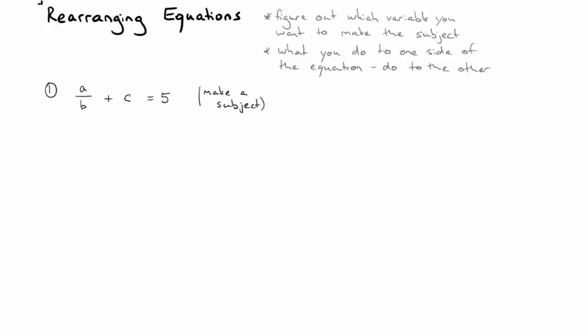So first of all, we want to get the A on its own, so we need to get rid of the C from this side of the equation. So if it's added here, we need to subtract it from both sides. So we'll say A on B plus C, subtract the C from that side, and we also need to subtract the C from that side. Of course, plus C minus C, they cancel out. So we are left with A on B equals 5 minus C.